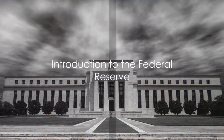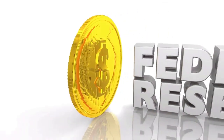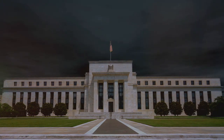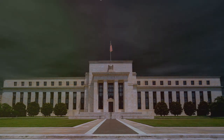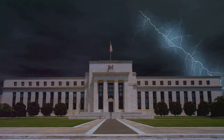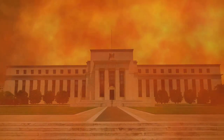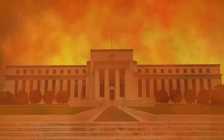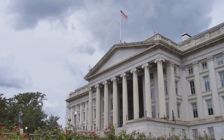Before we dive into the dual mandate, you need to understand what the Federal Reserve is. The Federal Reserve, familiarly known as the Fed, is not just another government agency — it's the central banking system of the United States, and it plays a pivotal role in the nation's economy. Established in 1913, the Federal Reserve was created to provide the country with a safe, flexible, and stable monetary and financial system. The Fed is independent within the government, meaning it operates within the general economic policies of the government, but carries out its work independently of political pressure to ensure the health of the economy.